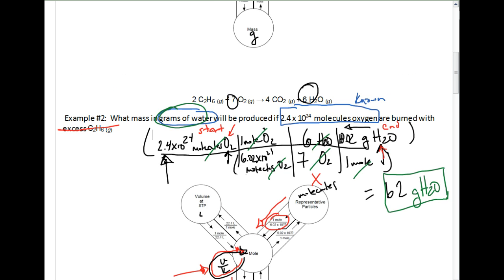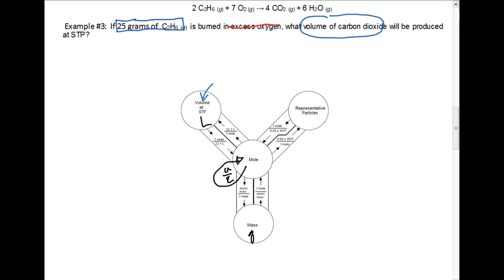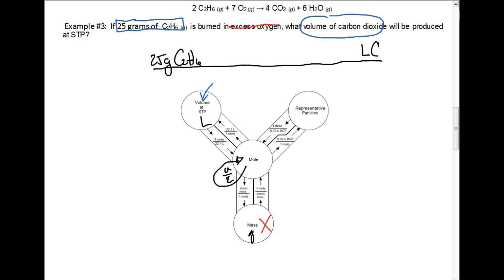One more problem using the same balanced equation. We have a known quantity of 25 grams of C2H6 burned with excess oxygen — we don't worry about the oxygen. We're looking for the volume of CO2 produced, and volume means liters. We set up our picket fence starting with 25 grams of C2H6, so we're starting at grams on the mole road and ending at liters of CO2.